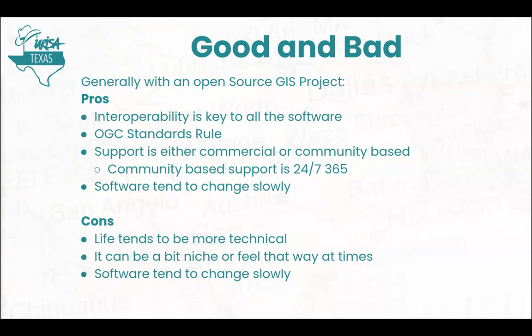Support can be commercial or community-based. I have people paying me for commercial support for QGIS. They can very easily get community-based support too — responses may be slower, but community-based support is 24/7, 365. There's always somebody awake somewhere. You can send an email to the QGIS crew, PostGIS, GeoServer — any of these pieces of software — and get an answer. May not be the answer you want, but you'll get an answer. The software also tends to change slowly. Nothing's really going to break. The next version of QGIS is coming out next week — I have no doubt it's going to work fine.